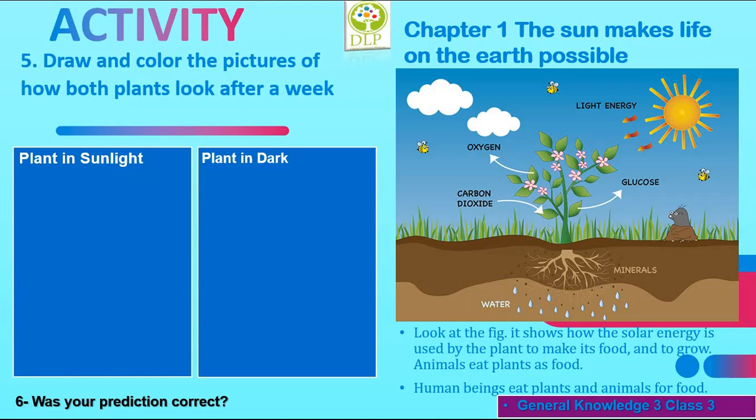The figure shows how solar energy is used by the plant to make its food and to grow. Animals eat plants as food, and human beings eat plants and animals for food.